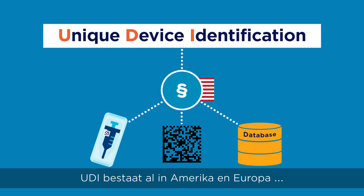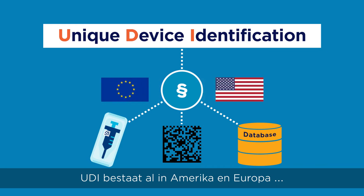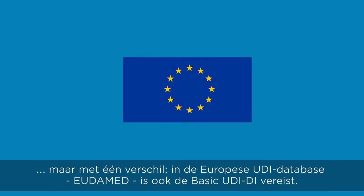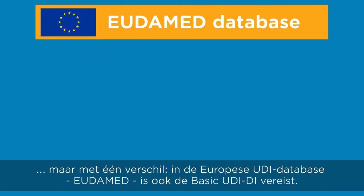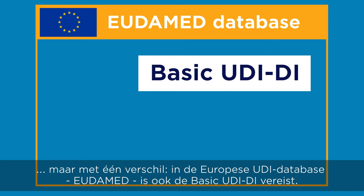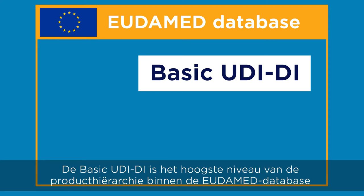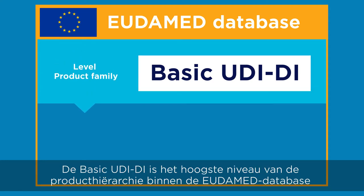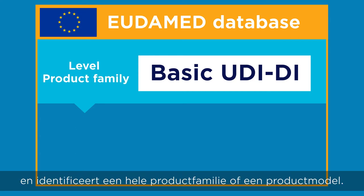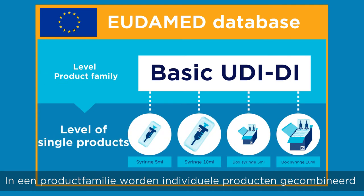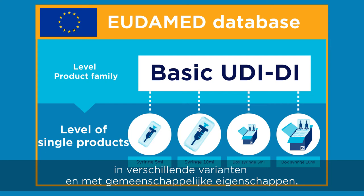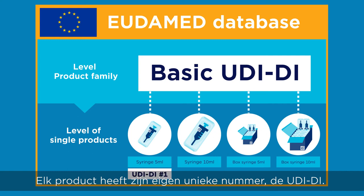UDI already exists in the United States and in the European Union, but with one difference. The European UDI regulations also require a basic UDI-DI. The basic UDI-DI is the highest level of identification of the product hierarchy within the EUDAMED database and identifies an entire product family or a product model. In a product family, individual products are combined in different variants and with common characteristics. Each product has its own unique number, the UDI-DI.